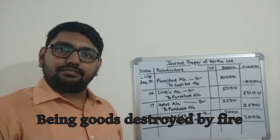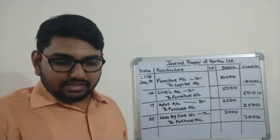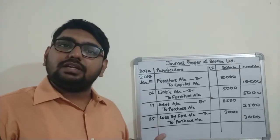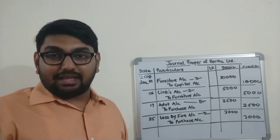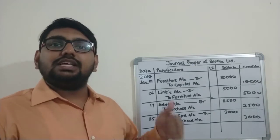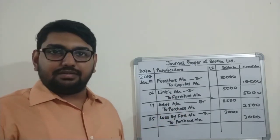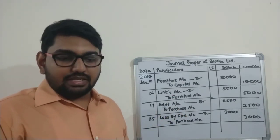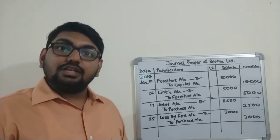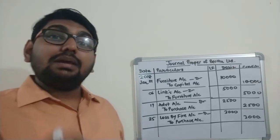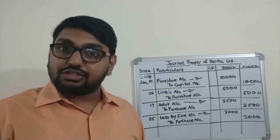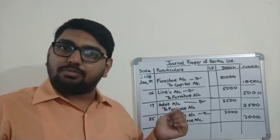January 28th: loan taken from bank, rupees 30,000 — this is a cash transaction, so it will be entered into the cash book; journal proper is not affected. January 31st: salary paid by cheque, rupees 12,500 — again a cash transaction, entered into the cash book. No entry is passed in the journal proper.